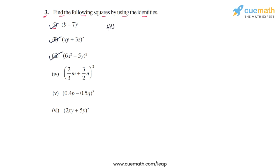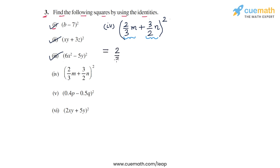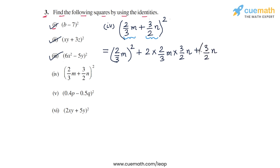Next we come to part 4, in which we have to find the square of 2/3 m plus 3/2 n. This is of the form a plus b whole square, which we expand as a squared plus 2ab plus b squared, where a is 2/3 m and b is 3/2 n. So we get 2/3 m whole square, plus 2 times 2/3 m times 3/2 n, plus 3/2 n whole square.